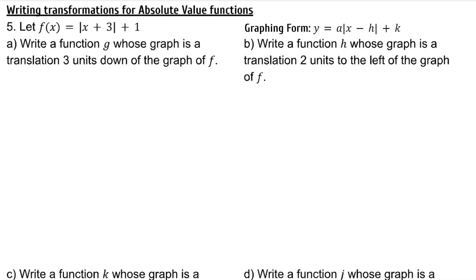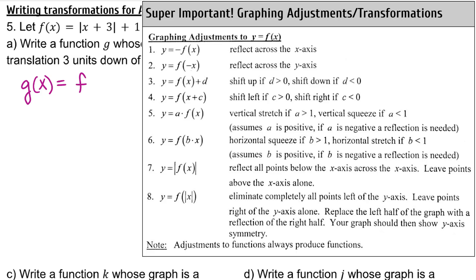When writing transformations for absolute value functions, remember the graphing form — we'll perform various algebraic operations to create the transformations described. Let f(x) equal absolute value of x plus 3 plus 1. Write a function g whose graph is a translation 3 units down of the graph of f. So g(x) is going to take the f graph and translate it 3 units down. 3 units down is a vertical shift — that's always the number being added or subtracted outside. So we're going to take f(x) and subtract 3 from it to move it 3 units down.